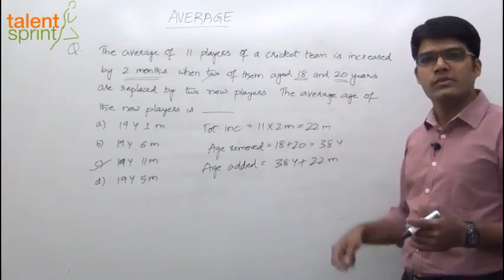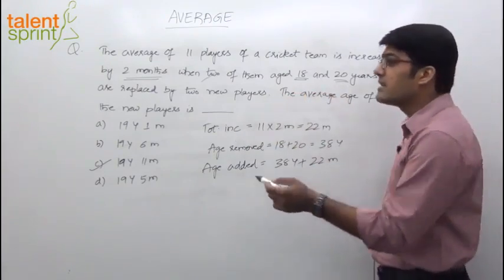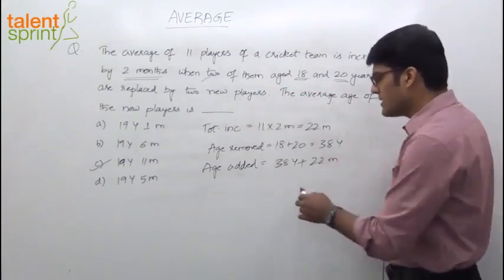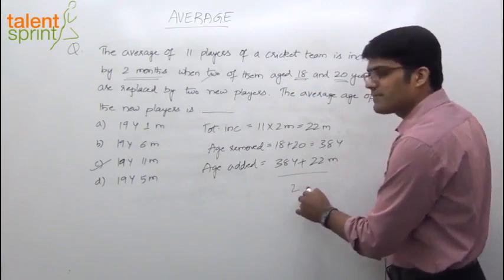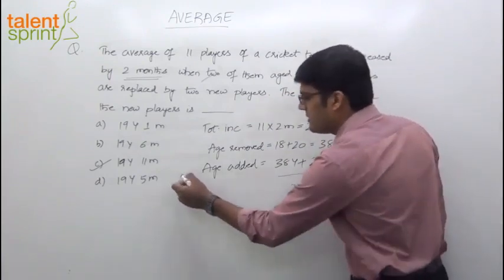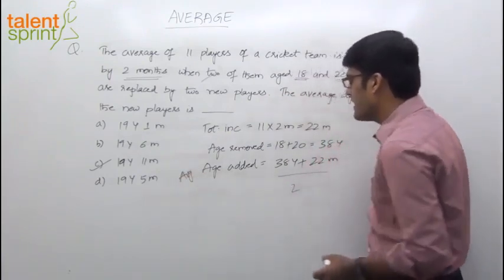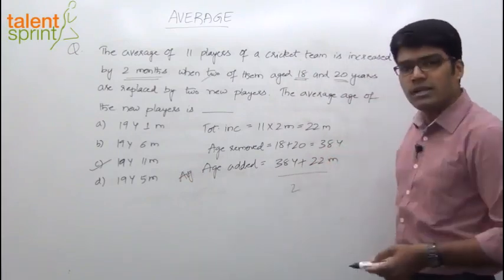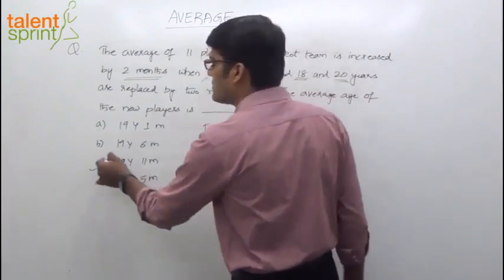The question says, find the average age of these 2 persons. There are only 2 persons. Find the average age of the new players. So what do we do? Divide this by 2. We want the average, right? So average will be divided by 2. The average added is 38 years plus 22 months divided by 2. How much is that? 38 by 2, 19 years. 22 by 2, 11 months. 19 years and 11 months, option C.